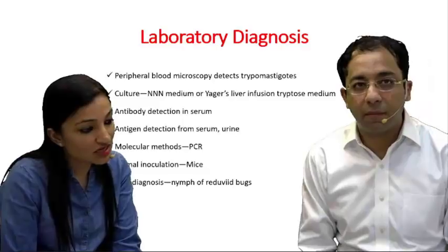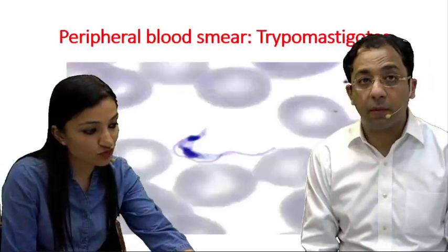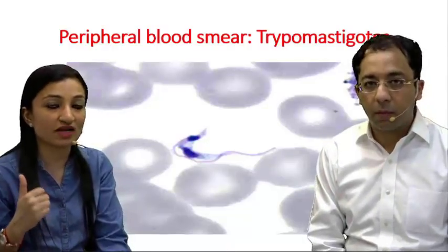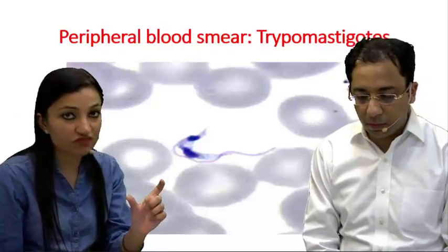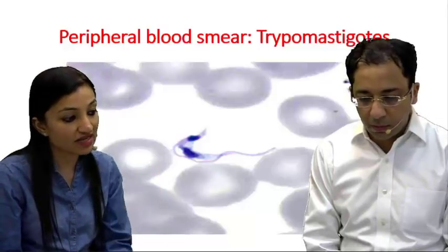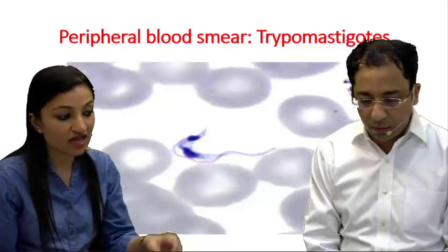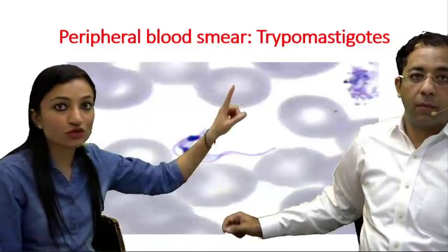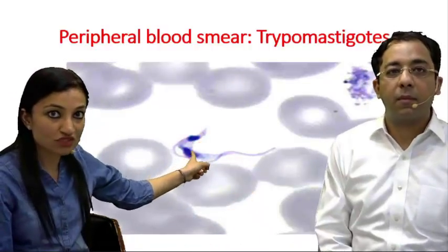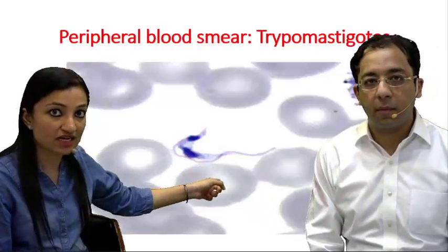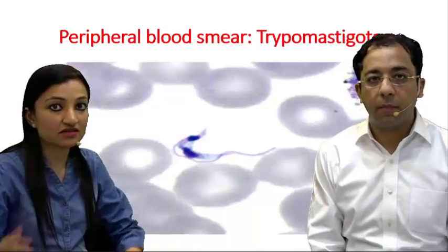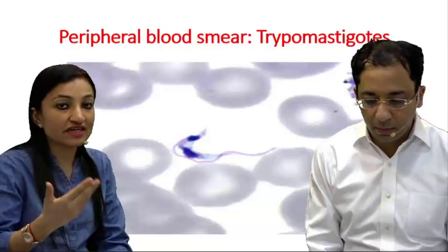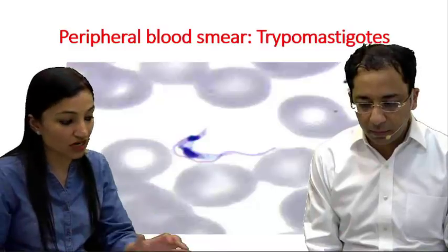For laboratory diagnosis, peripheral blood microscopy detects trypomastigote forms — as seen in our patient's earlier blood reports. These forms are about 20 microns in length, characteristically C-shaped or U-shaped, with a flagella emanating from the posterior end and spanning over the entire body as an undulating membrane and coming out from the anterior end. This characteristic C or U shape suggests Trypanosoma cruzi, to be confirmed by other tests.